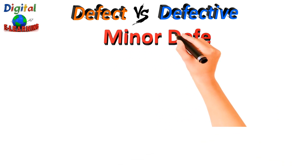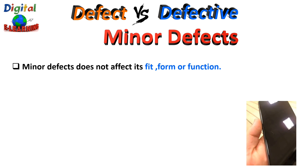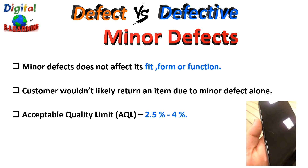Minor defects are usually small, insignificant issues that do not affect the fit, form, and functionality of an item. Customers would not likely return an item due to minor defects alone. An example could be a small scratch on the back of a phone — because of this, you would probably not return the product, as these defects are hardly noticeable by customers. Mostly, the AQL level for minor defects is set around 2.5 to 4 percent.